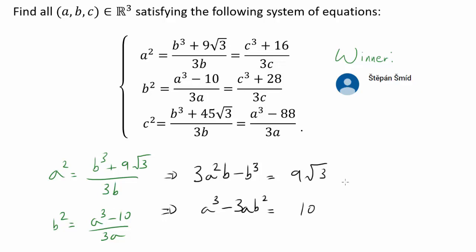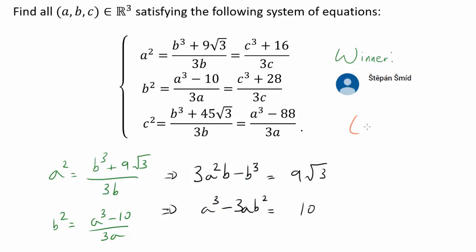Why did we rearrange the equations like this? Because something catches our attention: we see A³, we see B³, and we see 3A²B and 3AB². What does that make you think of? When we evaluate (A+B)³, we get A³ plus 3A²B plus 3AB² plus B³. So that's encouraging us to maybe add these two equations — but we don't quite have that on the left-hand side because we have a minus B³, not plus.